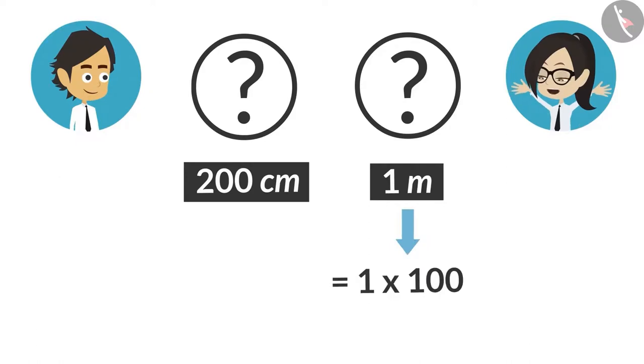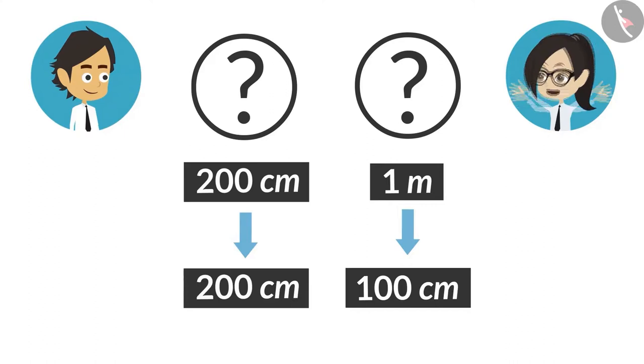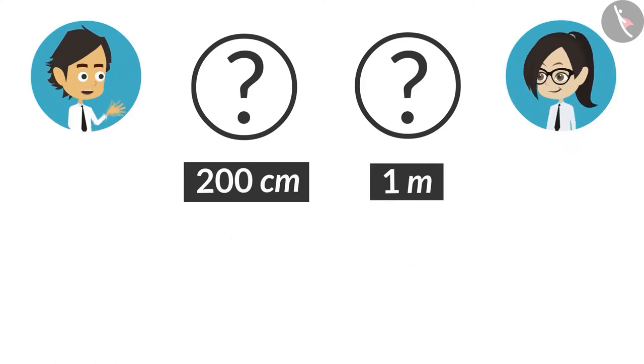To convert a meter into centimeter, we will multiply it with 100. So we can write it as 100 centimeters. Now if we compare 100 centimeters with 200 centimeters, then we can tell that 200 centimeter is bigger.